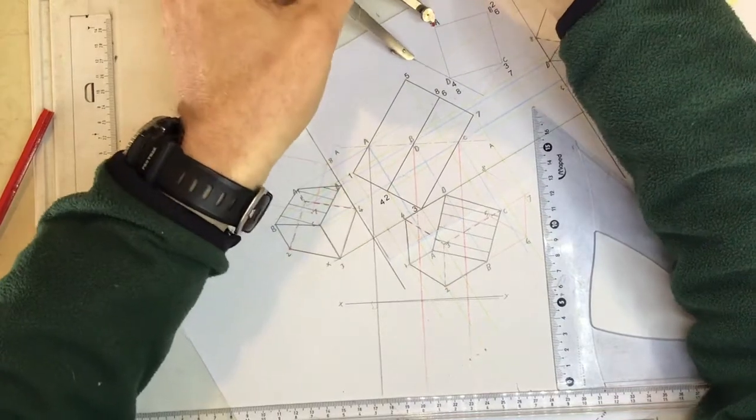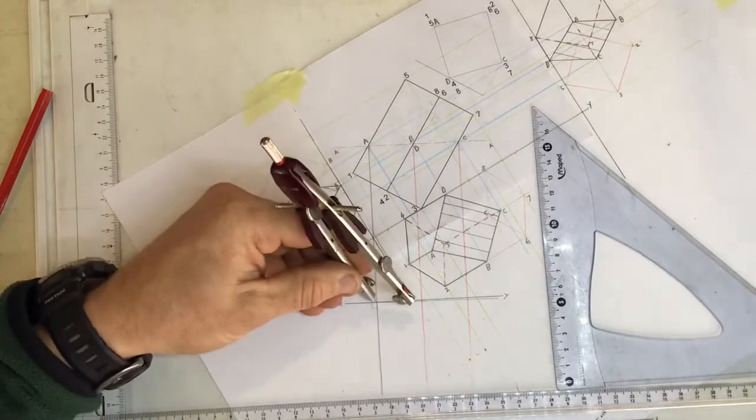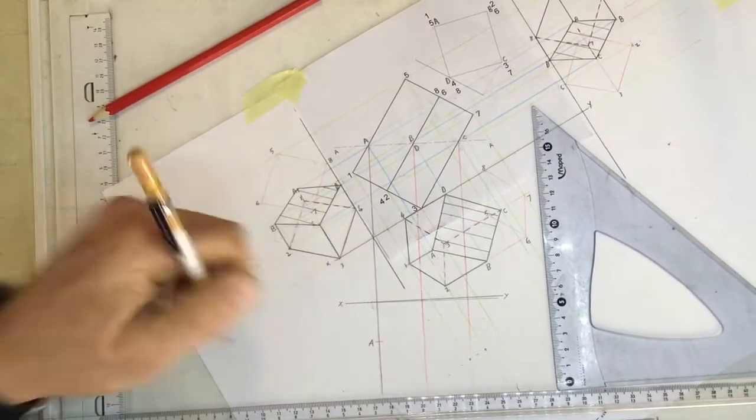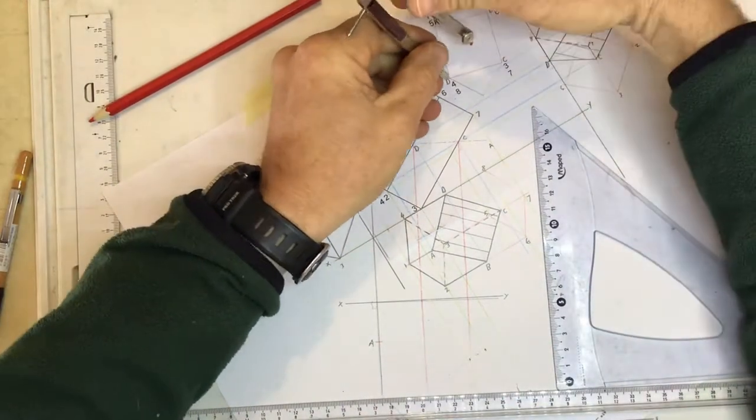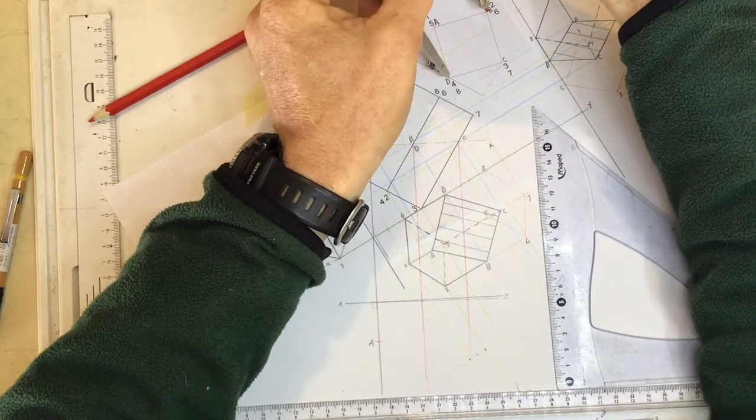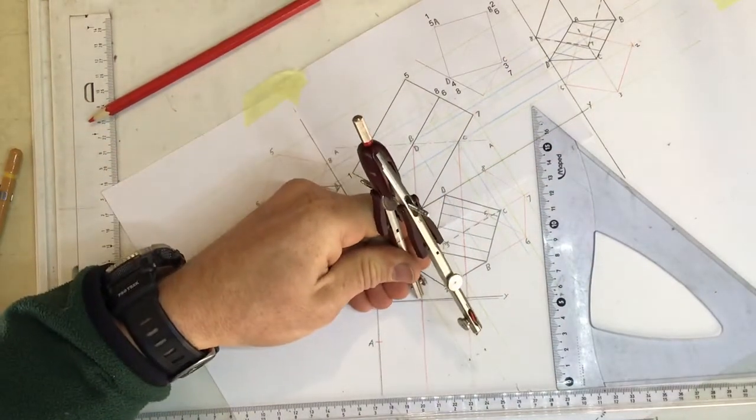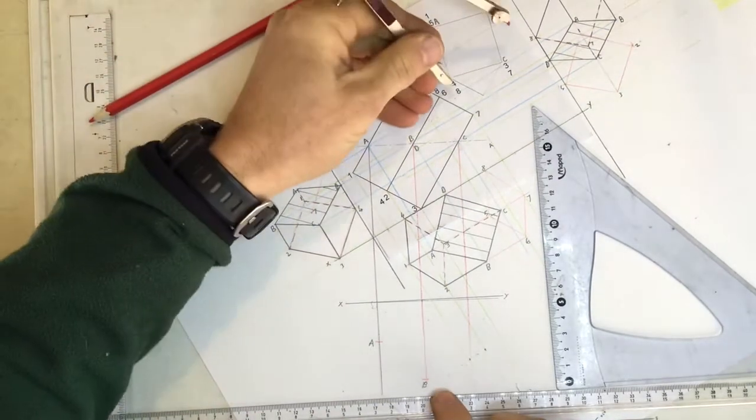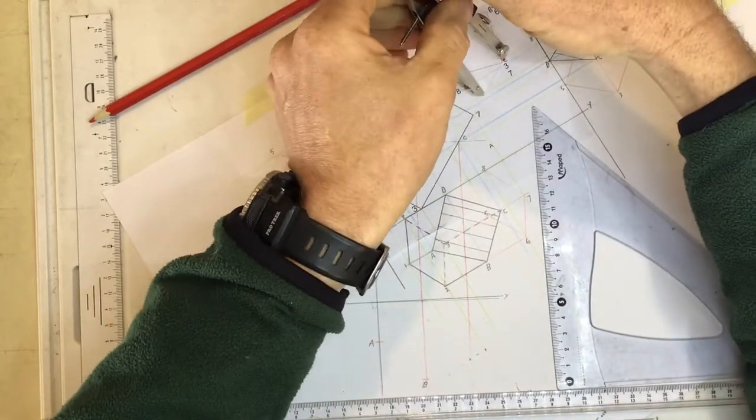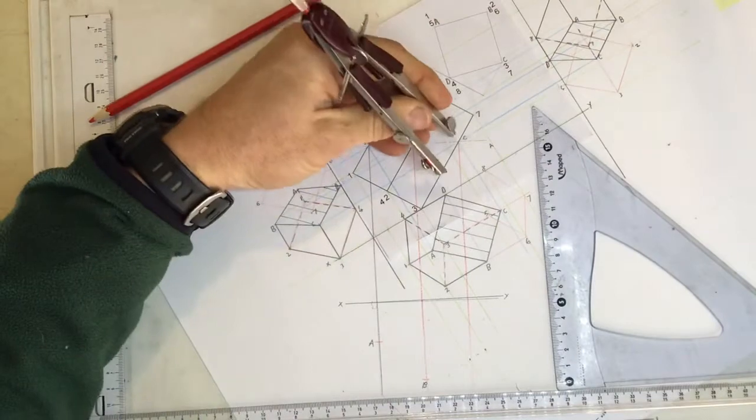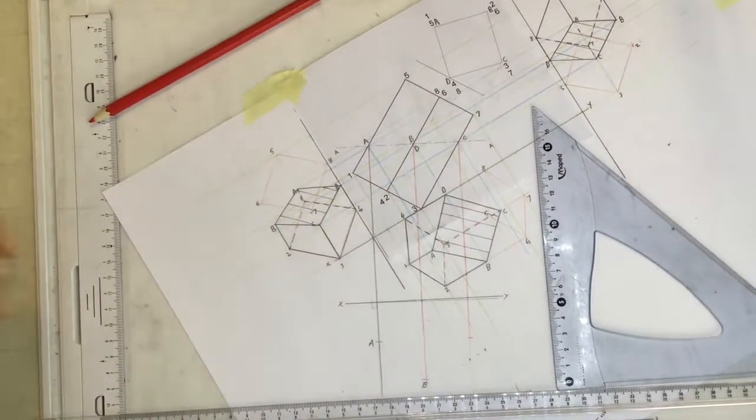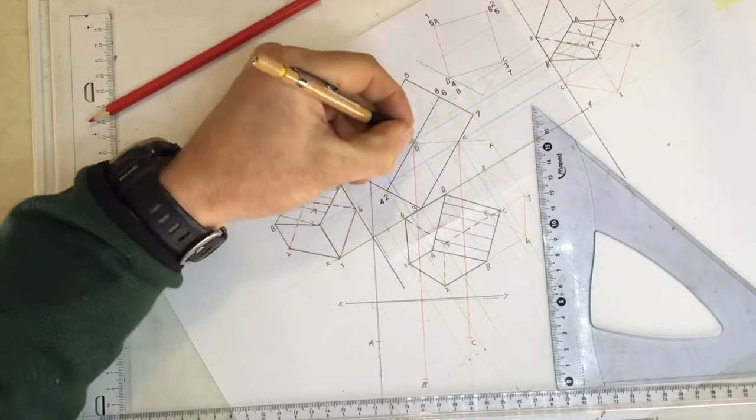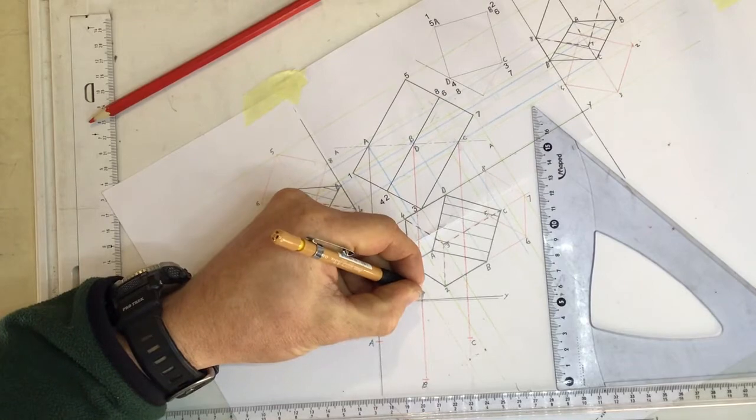A is that distance away from the xy axis. I find A, come down to my new xy axis for my true shape and I'm going to label that as A over there. B is that far away from the xy axis. Find B over here, come down to the new xy axis, mark off B. There's B on the true shape view. I'm going to take C over here. C is that distance away from the xy axis. Find C, come down to the xy axis over here, mark off C over there. And you can see that D over here is touching the xy axis. There's D coming down, it will still be touching the xy axis.